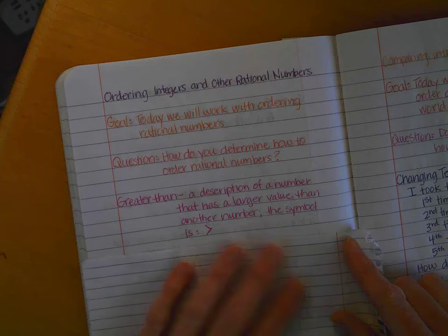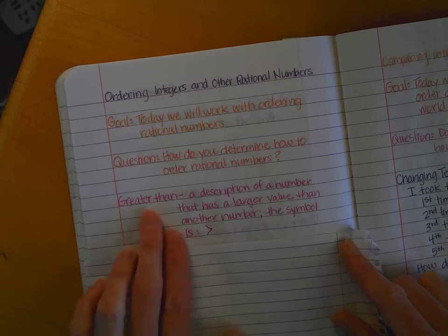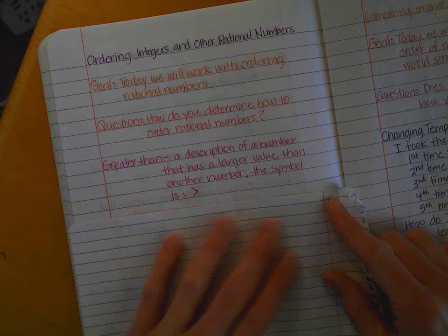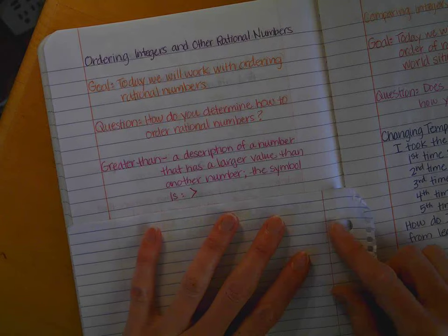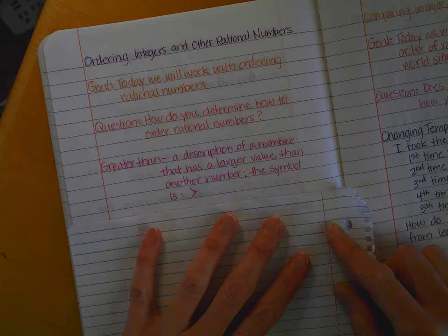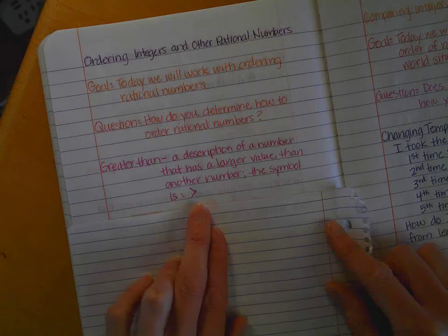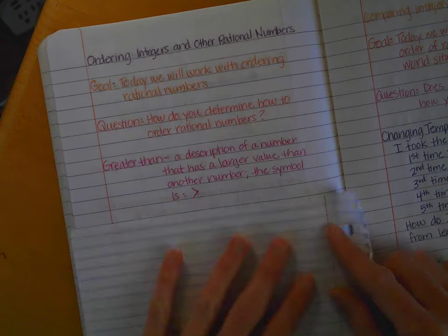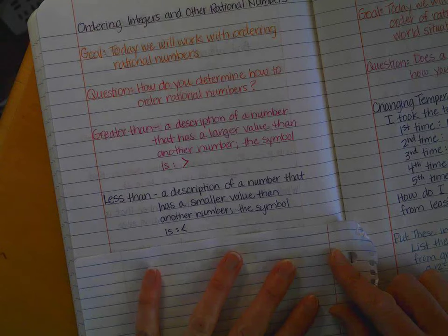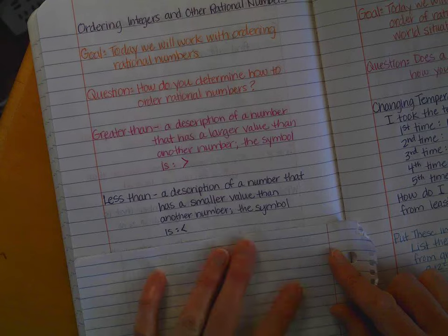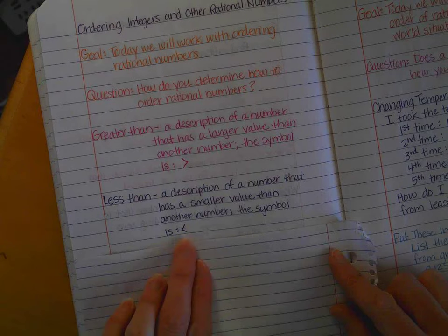Some things that might help you out with that is understanding what greater than means. Greater than is a description of a number that has a larger value than another number. The symbol that we use looks like this. Less than, however, is kind of the opposite of that. It is the description of a number that has a smaller value than another number, and the symbol looks like this.